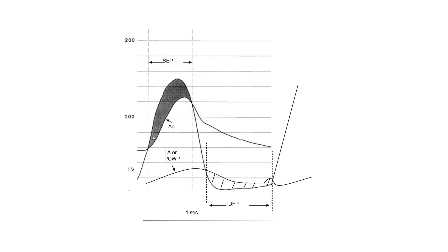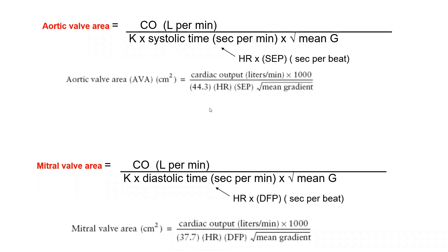The systolic ejection period is essentially the intersection distance between the LV and aortic pressure recordings — the distance between the two points of intersection. So aortic valve area equals cardiac output divided by heart rate times systolic ejection period times the square root of mean gradient. The constant for the aortic valve is 44.3, and you multiply by 1,000 to reconcile units (liters on top, milliliters on the bottom).